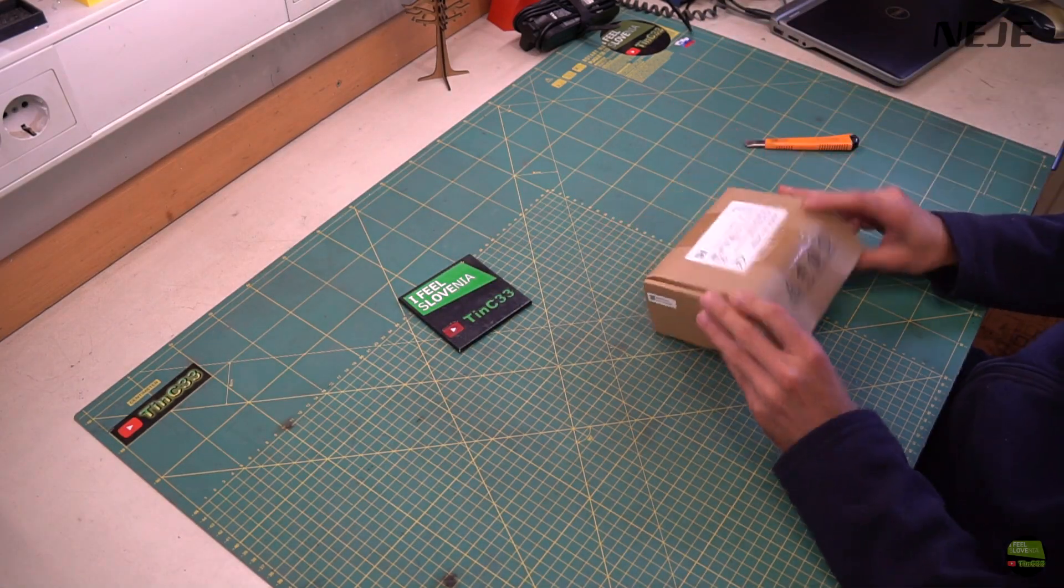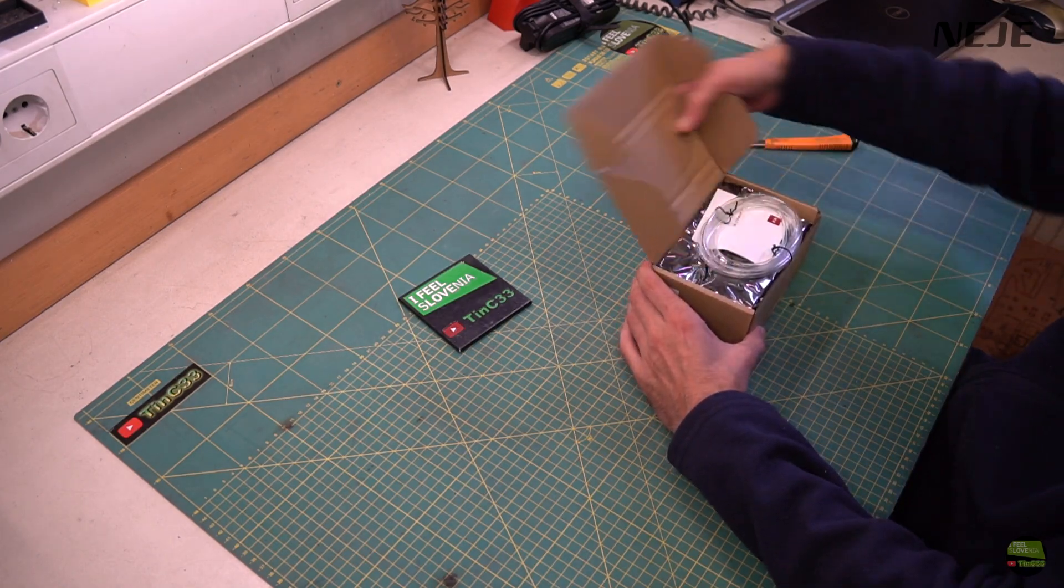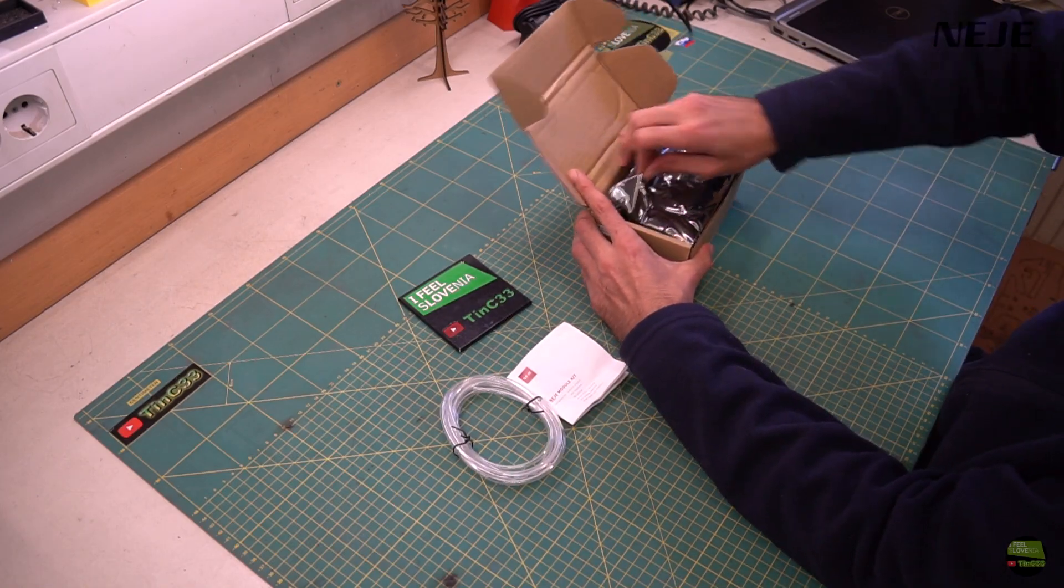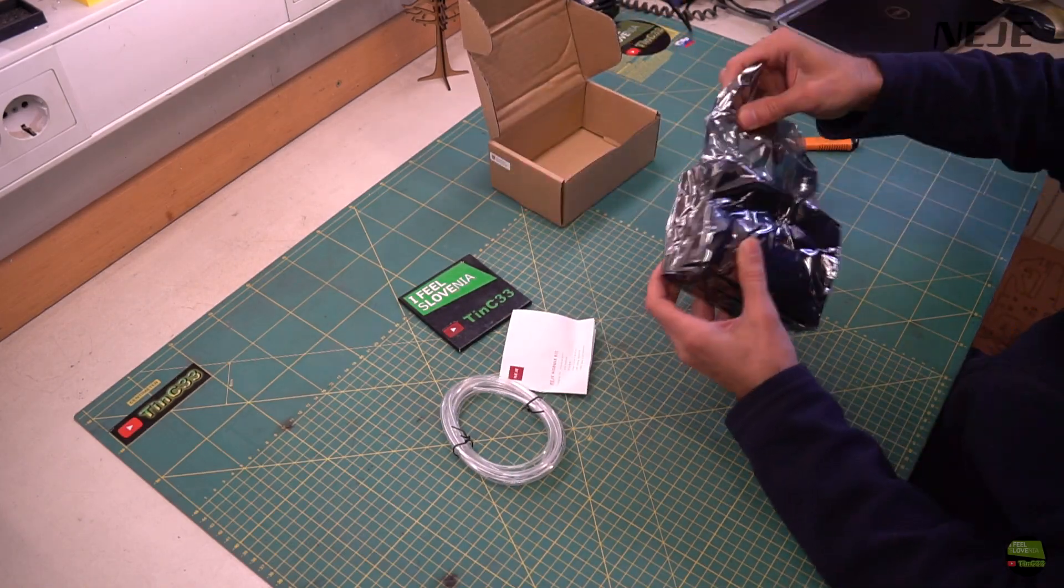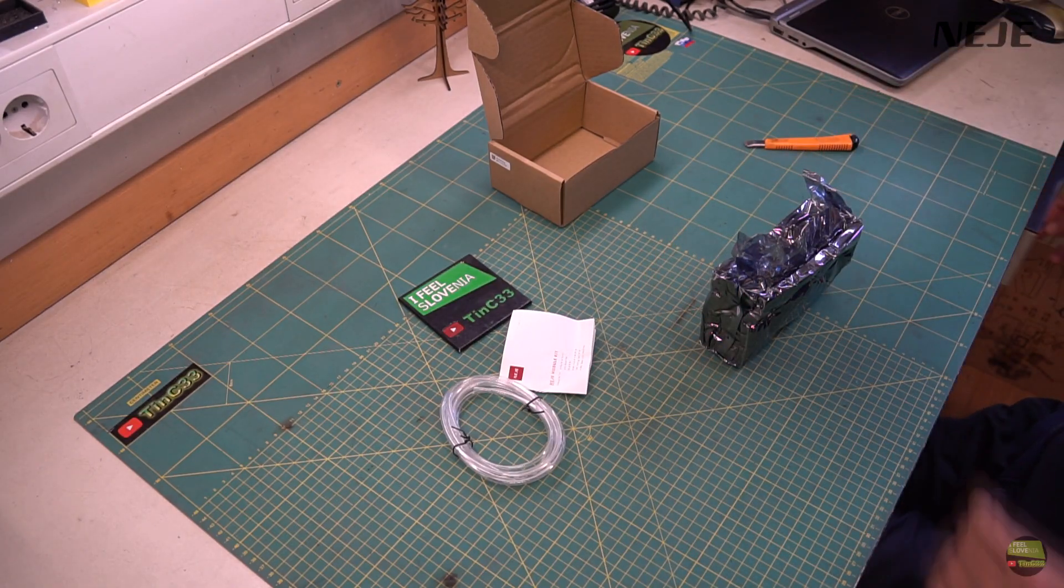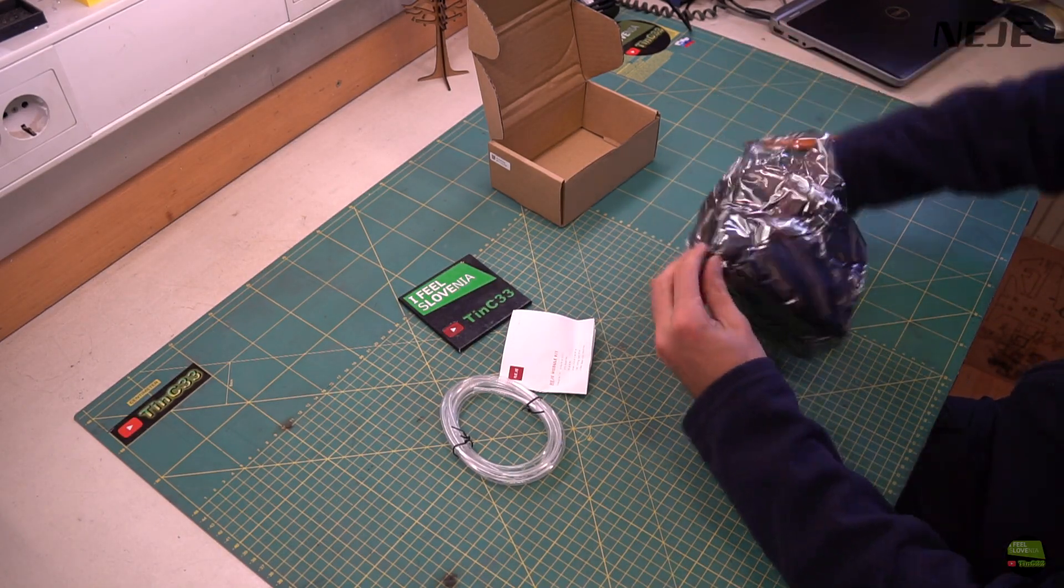I got this package from Europe Warehouse so it's packed in an additional box. Inside we find a smaller box with packaging like usual. On top we find manual and a piece of air assist tube. Laser model and accessories are stored in sponge and then vacuum sealed into a strong anti-static bag.